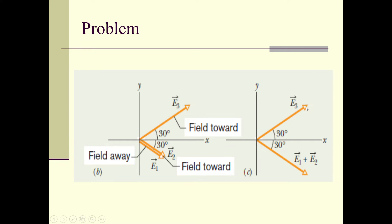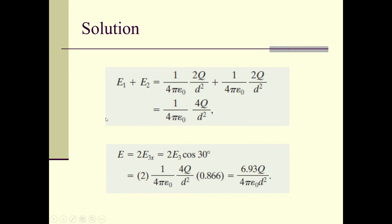Now we have two vectors remaining — E3 and (E1 + E2) — and we need to add them. To add two vectors we resolve them into components. Draw the projection on the x-axis: the y-component of E3 is E3·sin θ, where θ = 30° in this case. Similarly, the y-component of (E1 + E2), which equals E3, is also E3·sin θ with θ = 30°. These two y-components are in opposite directions, so they cancel each other out, and we are left with only the x-components.